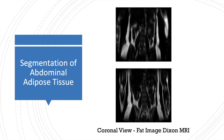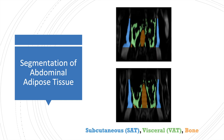Abdominal adipose tissue represents an important biomarker of metabolic disorders and has become a major interest of many researchers, especially the proportion between visceral and subcutaneous adipose tissue. Today, the gold standard for quantifying this type of tissue is the segmentation of fat images from a Dixon MRI protocol.